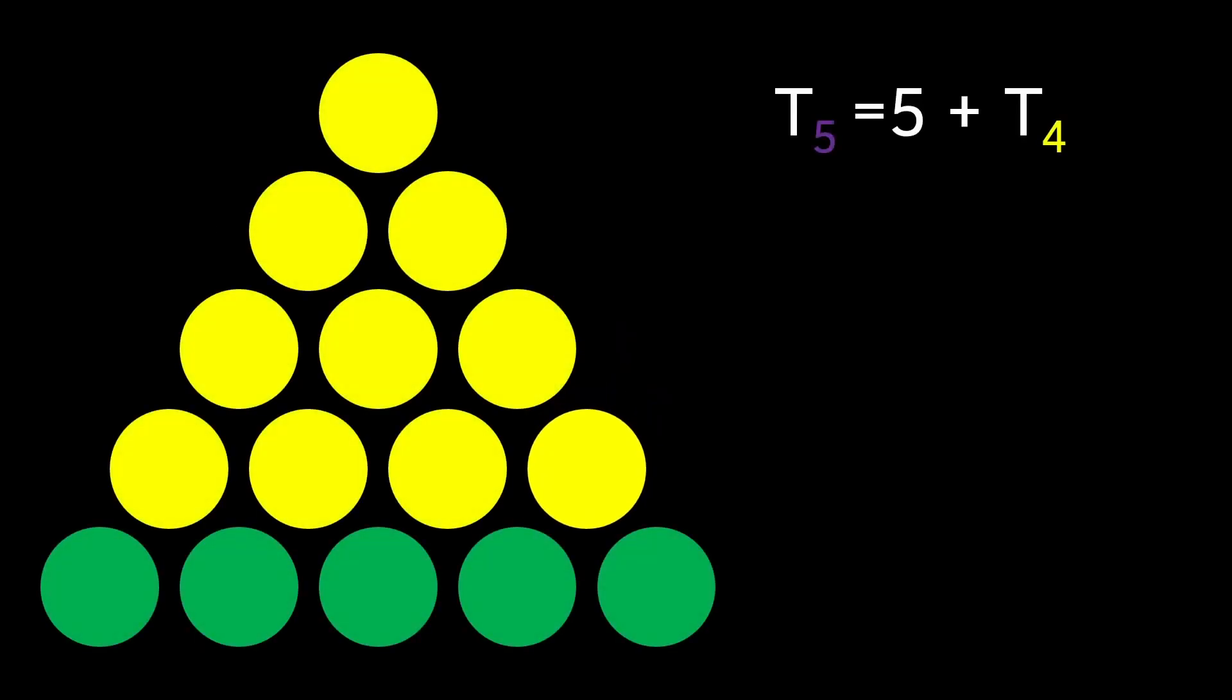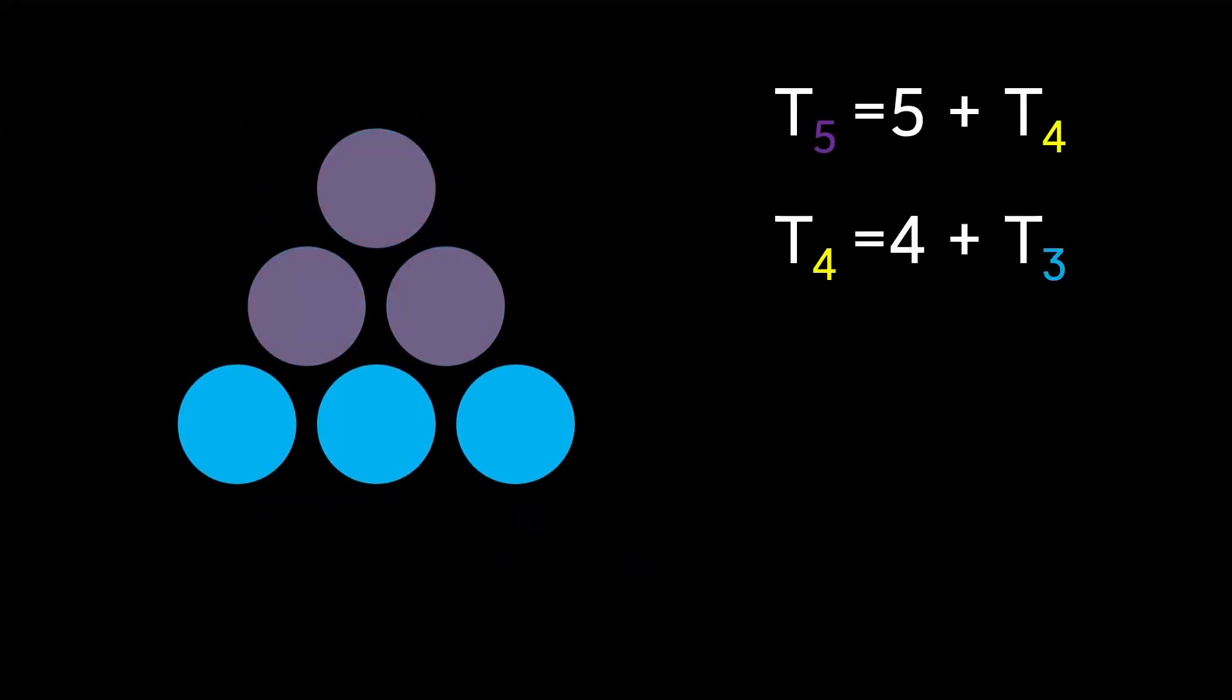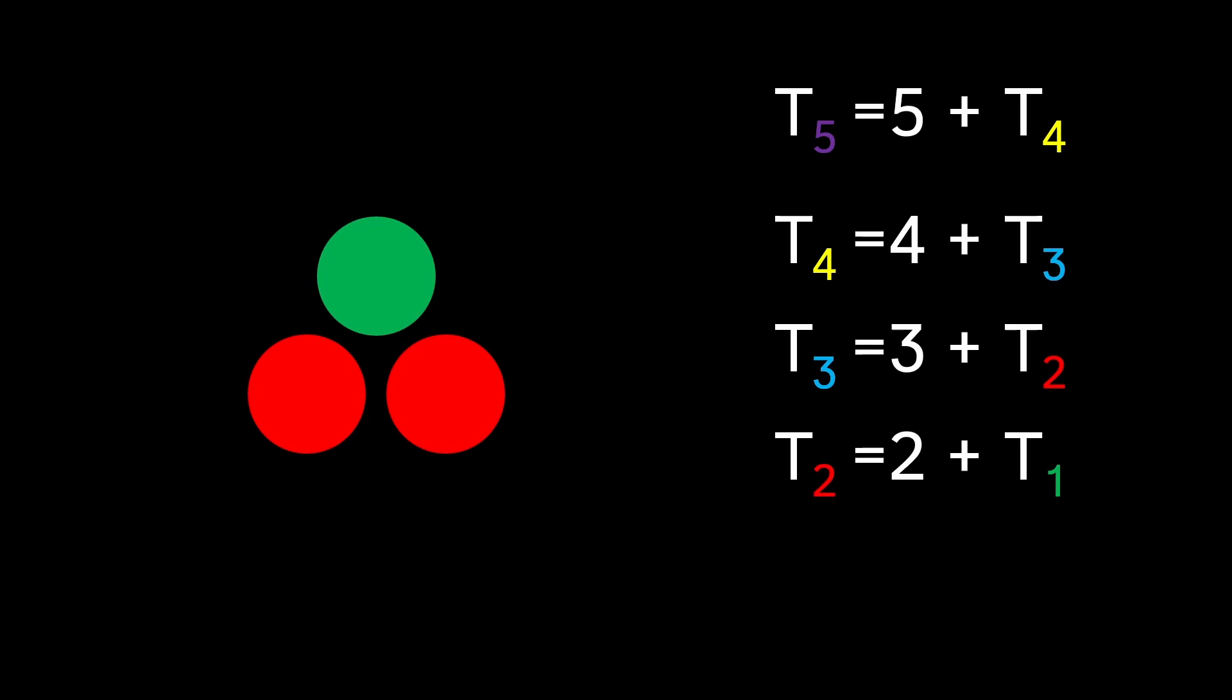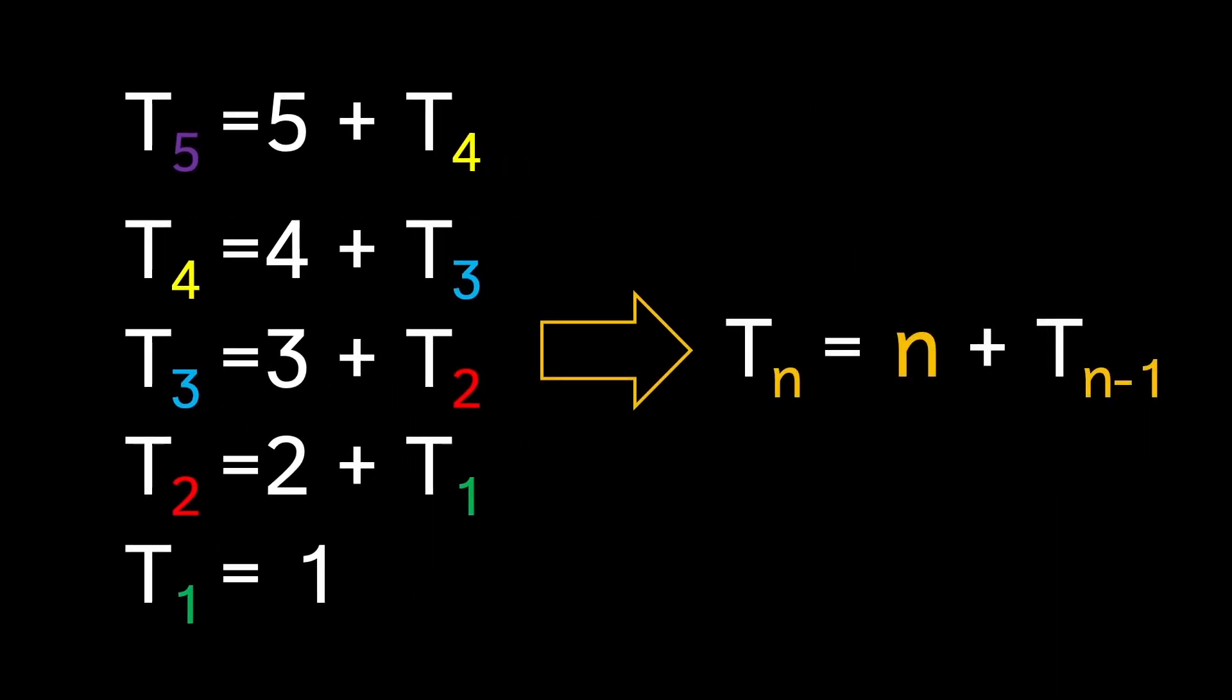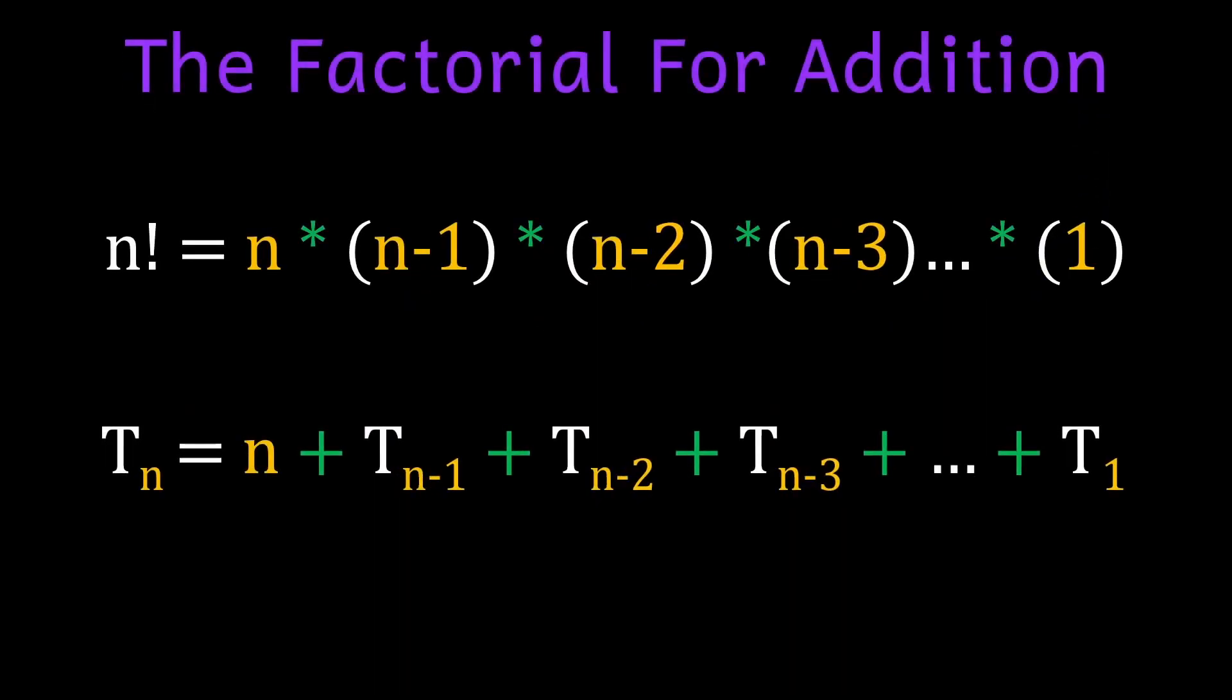If this looks familiar, that's because, like factorials, triangular numbers have a recursive relationship inside of them, where the nth triangular number equals n plus the nth minus one triangular number. And by fully expanding this logic, we get an expression that looks identical to a factorial if we substituted the multiplication for addition.